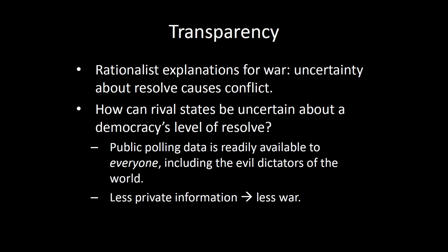The transparency argument works like this. Recall back to the unit on rationalist explanations for war: uncertainty about resolve causes conflict. If I suspect that you don't really care very much about the issues at hand, then my optimal offer is going to demand a lot out of you. And if it turns out that you actually do care a lot, then you're going to reject my offer and fight a war. These sorts of explanations come back up again and again in this class, so if you don't remember that argument, you should go back to that video. You need to understand that in order to follow the rest of this argument.